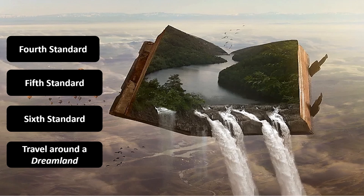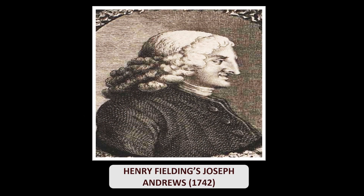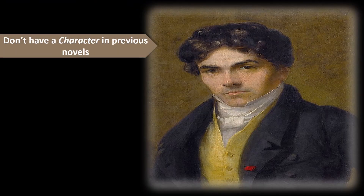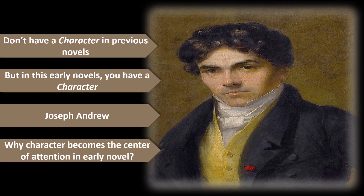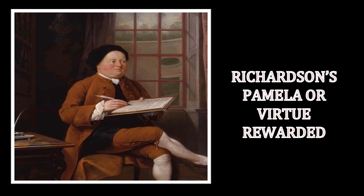These three novels precede the novel we are discussing. Henry Fielding's Joseph Andrews, published in 1742, came in the middle of the 18th century. For the first time there is a novel with the name of a character — Joseph Andrews. A character becomes the center of attention because the story becomes more human when you imagine the protagonist in human terms. The conversations in such novels become much more intimate.